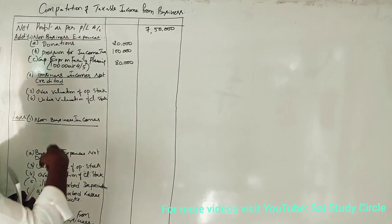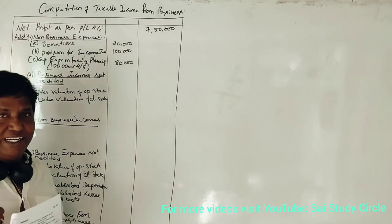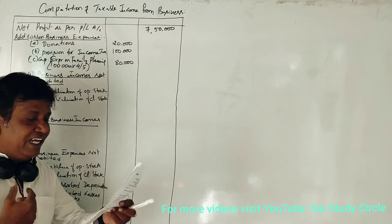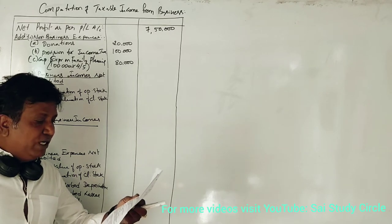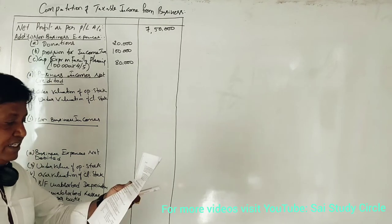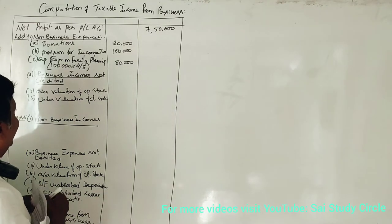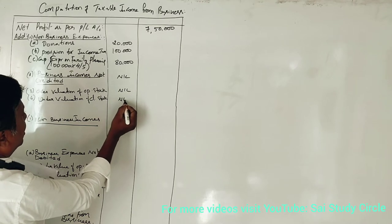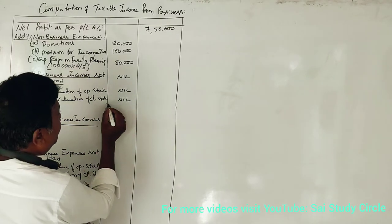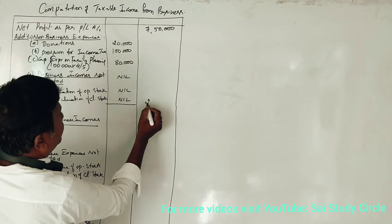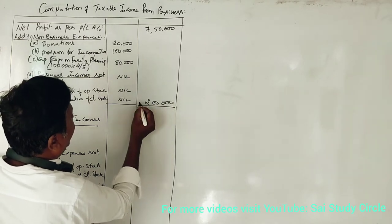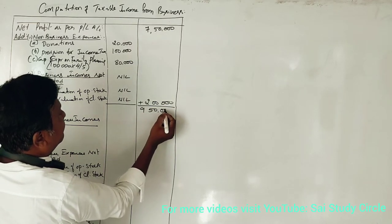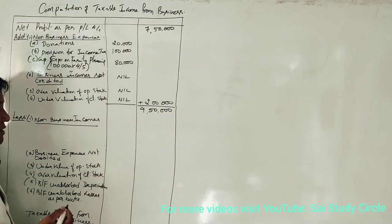The second heading is business income not credited to profit and loss account. Any income related to business that was not credited — we look in the adjustments, but we don't have any such incomes, so we write nil. There is also no information about opening stock and closing stock, so nil. Adding these items, we get 2 lakh rupees added to 7,50,000, giving us 9,50,000 rupees. From this, we deduct credits to profit and loss account, i.e., non-business incomes.